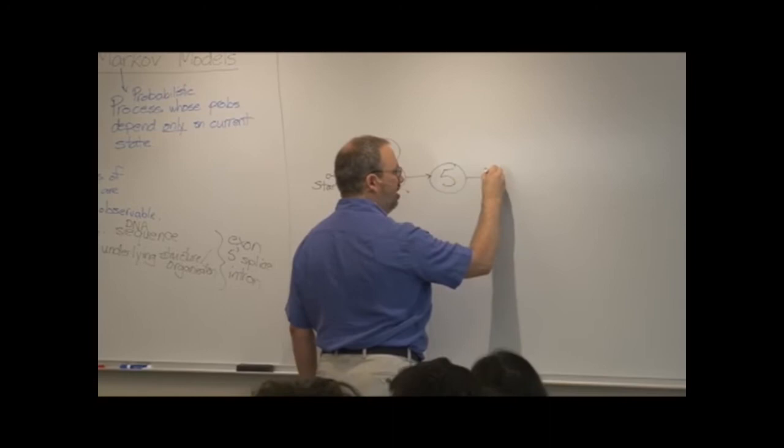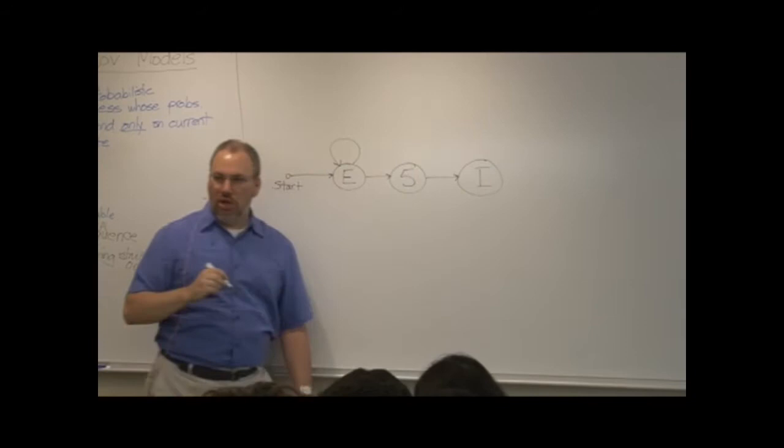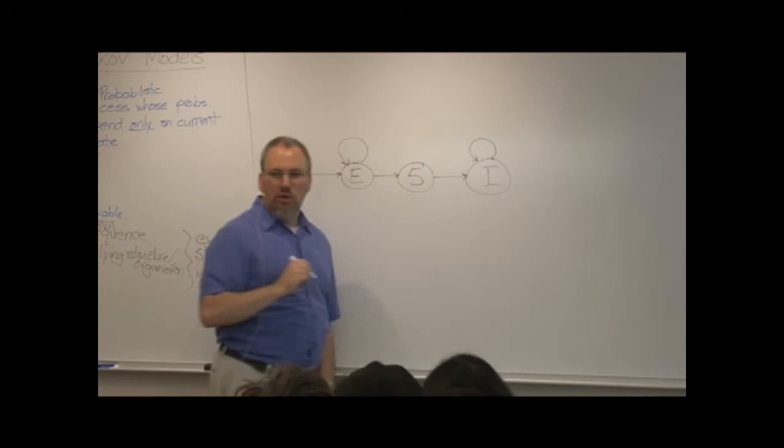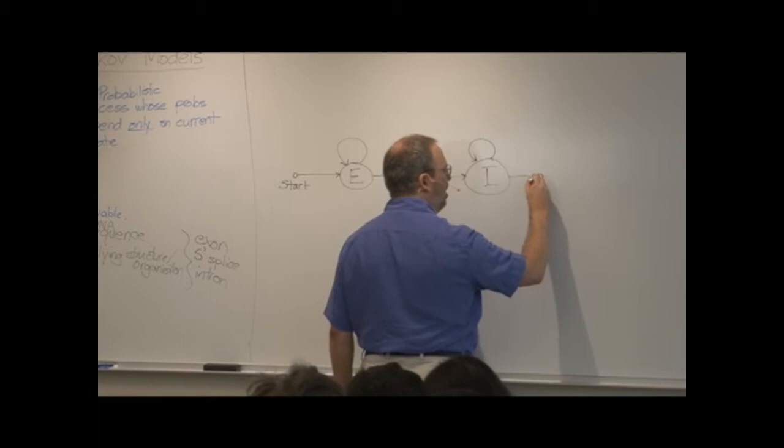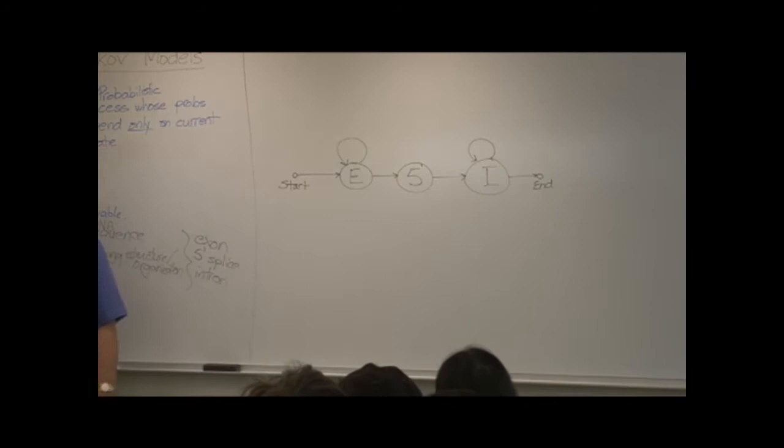If it's exactly one nucleotide long, it doesn't loop back to itself. Instead, after the five prime splice site, you go directly to the intron where you can stay for some unknown number of nucleotides. And then at some point, you reach the end of your read.